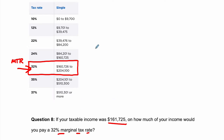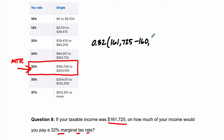So in this case, you're only paying 32% — I'm not going to do the full calculation, I'm just going to set it up so you can see it — on $161,725 minus all the money that's in this bracket, which is everything over $160,725, the top of the previous bracket. So everything past the end of that bracket. In this case, what is that? That's $1,000.